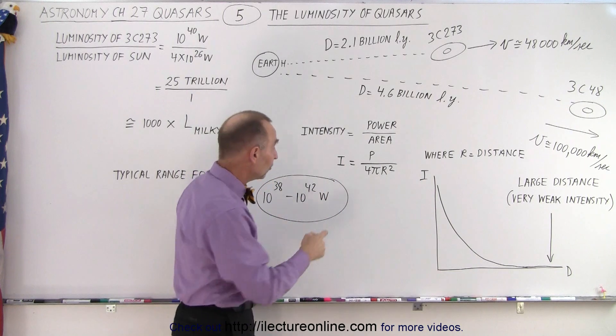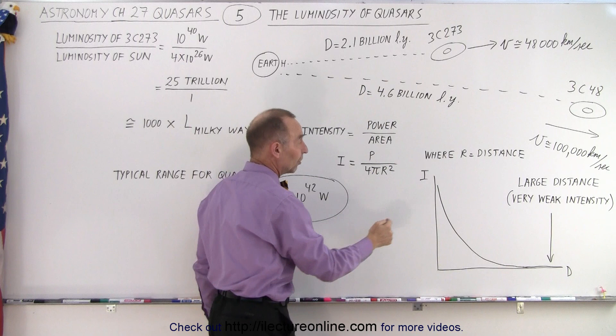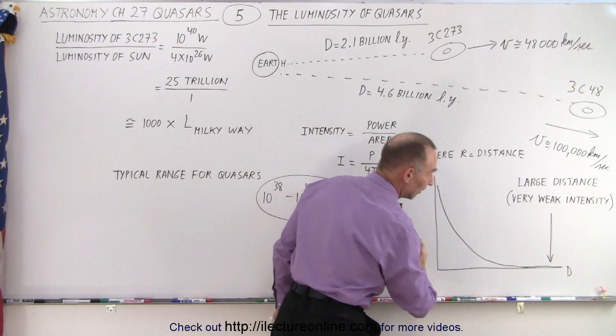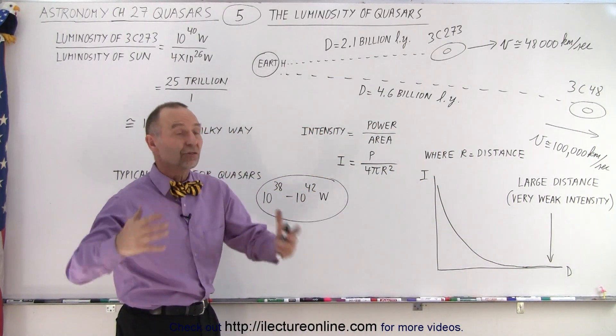But notice, since the intensity is proportional to 1 over the distance squared, and the distances are enormous, the intensity drops down to almost zero relative to the initial signal if the distance becomes really, really long. And in this case, they're enormously far away.